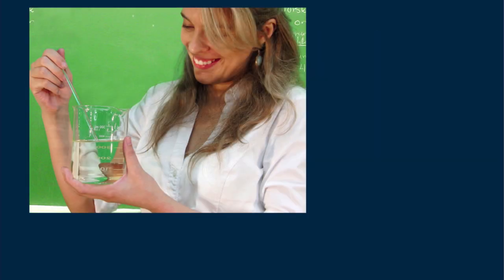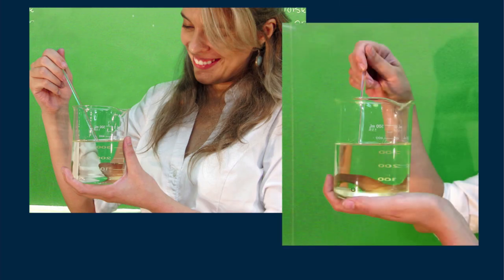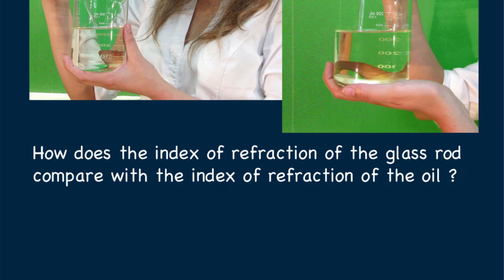Here's an interesting application of no refraction when there's no change in light speed. My niece Stephanie holds a glass rod about to be submerged in a container of vegetable oil. You see the rod in air — actually its edges. But when the rod is submerged, the glass doesn't show; you don't see its edges — it's invisible. So the question I leave you with is this: how does the index of refraction for the glass rod compare with the index of refraction of the oil? Until next time, good energy.